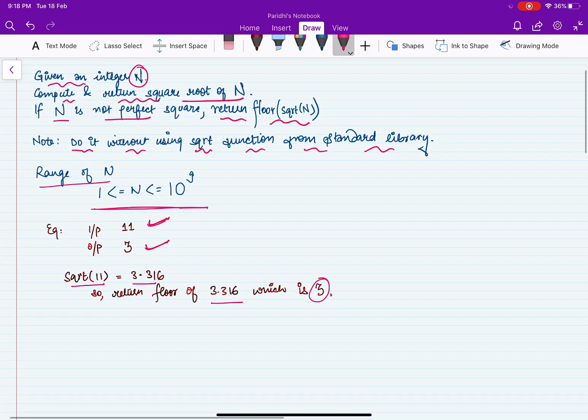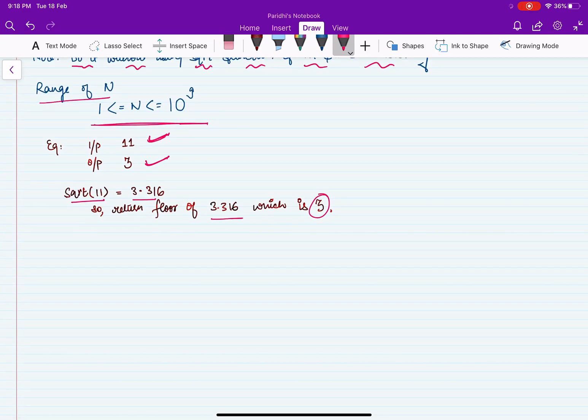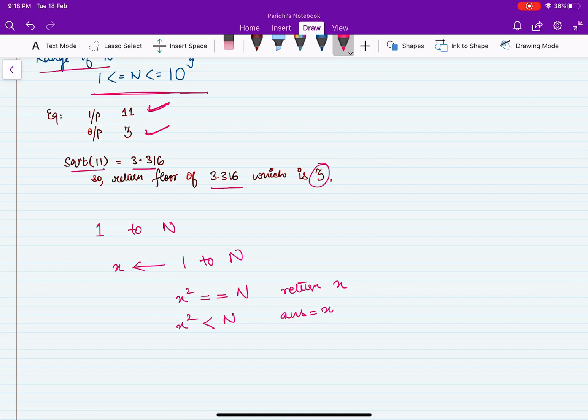Let's see how this problem can be approached. One possible way is, we know that the range of our answer is going to lie from 1 to n. So we can simply iterate from 1 to n and check that if x square becomes equal to n, then we can return the value of x. Else, if x square is less than n, then we know that this x is one possible answer.